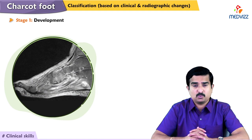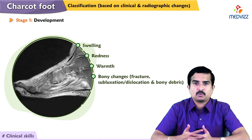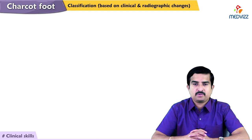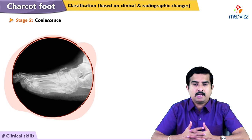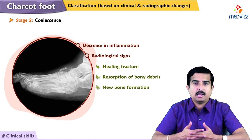Stage 1, the developmental stage, presents with swelling, redness, and warmth, and bony changes such as fracture, subluxation, dislocation, and bony debris apparent on plain radiograph. Stage 2, the coalescence stage, shows decreased clinical signs of inflammation, and radiological signs of fracture healing with resorption of bony debris and new bone formation are evident.